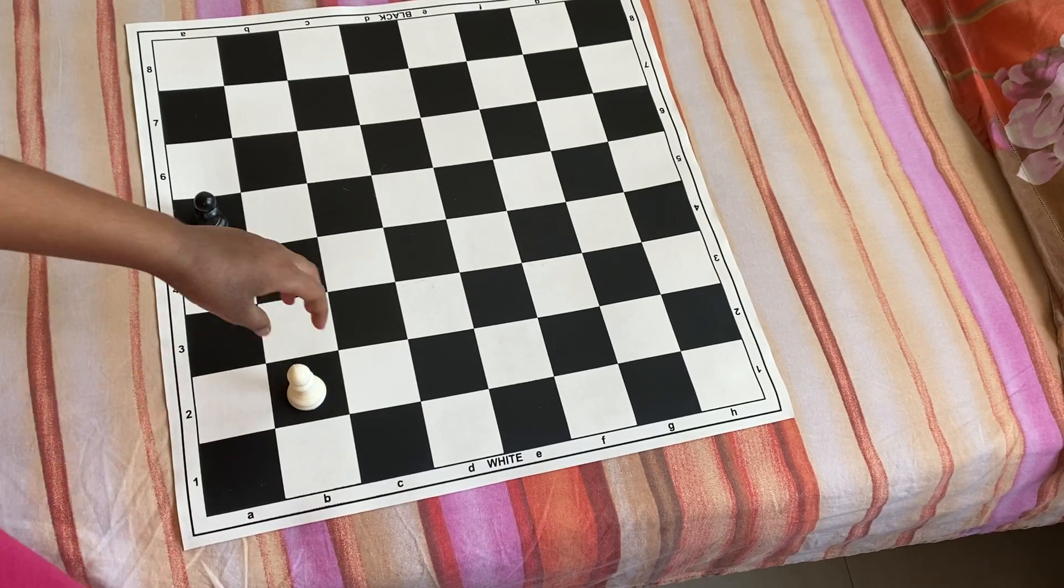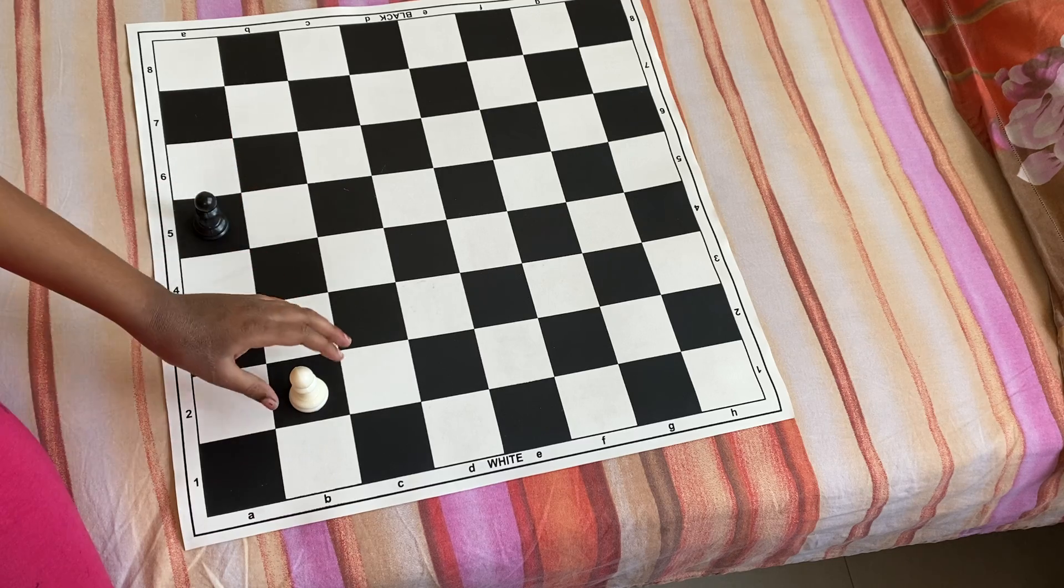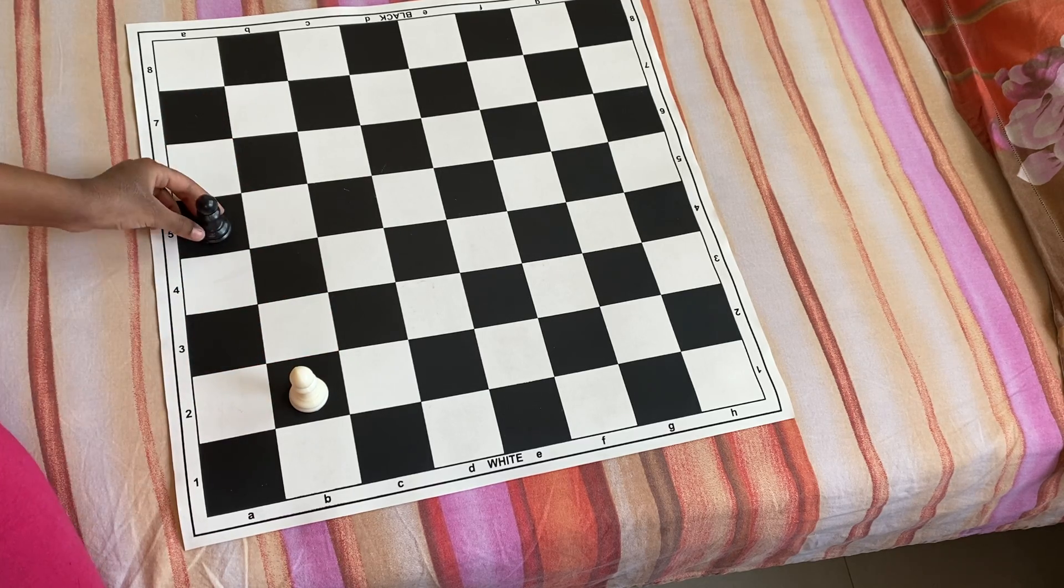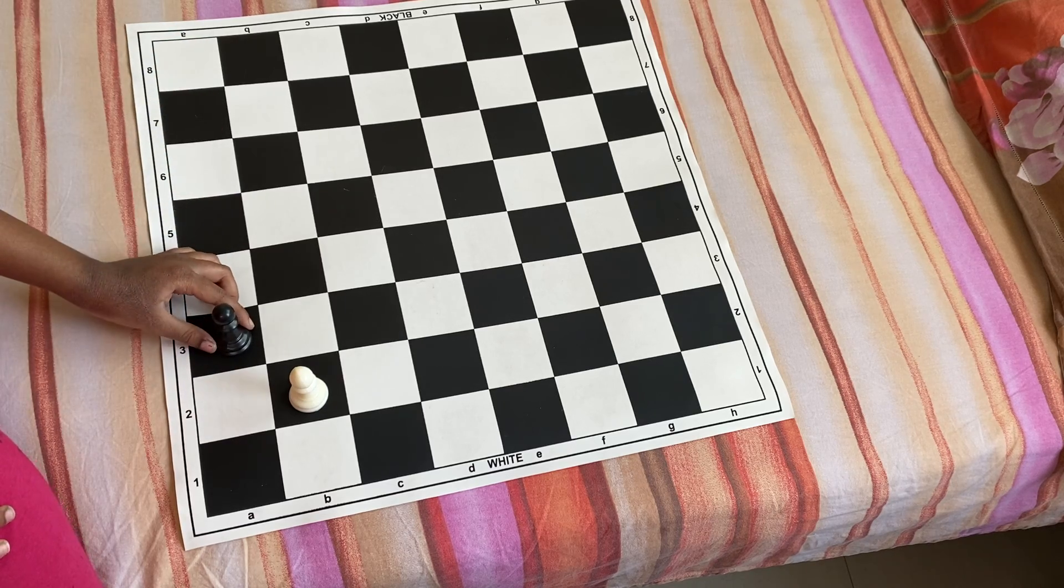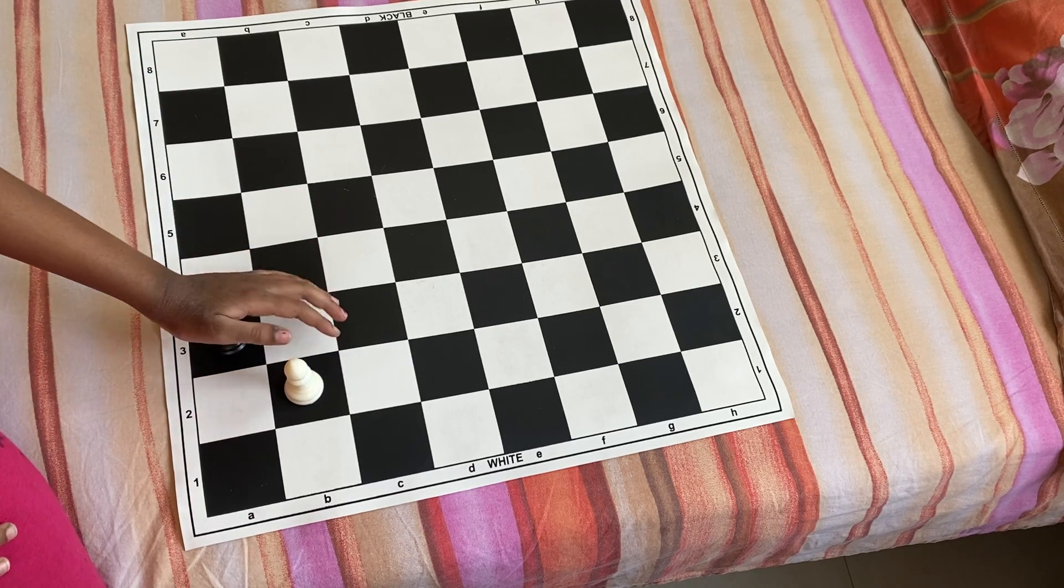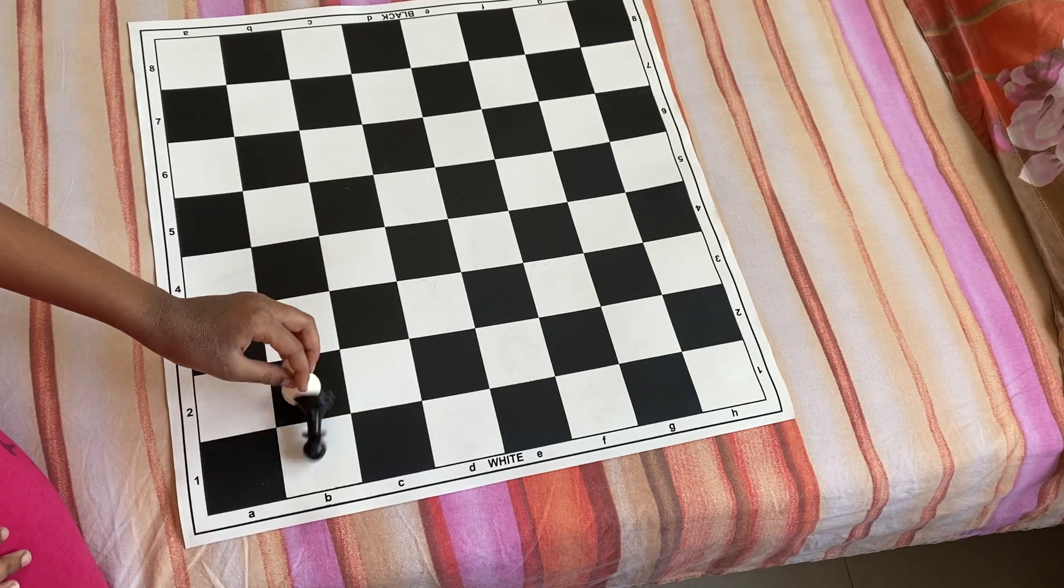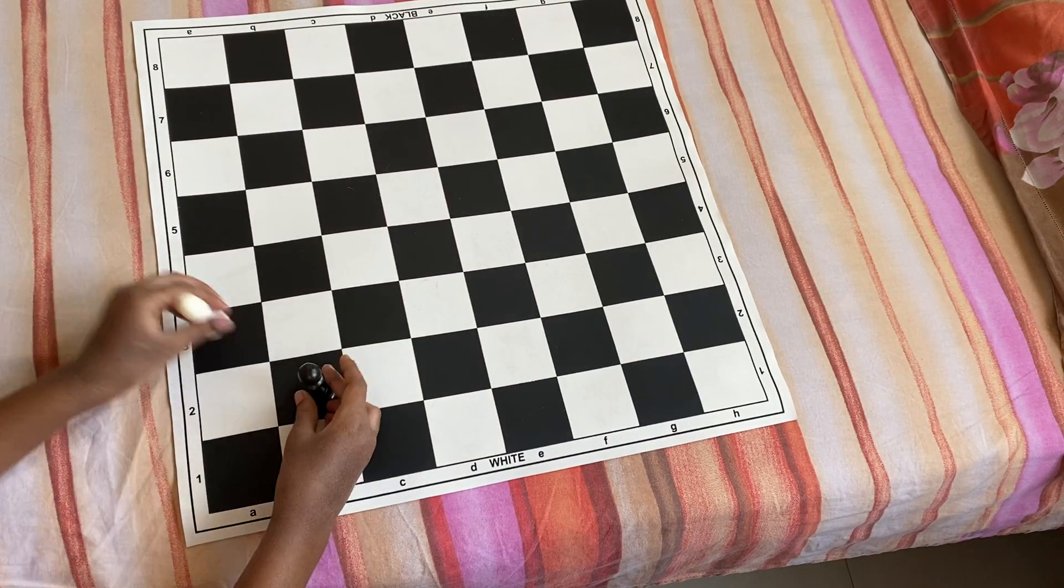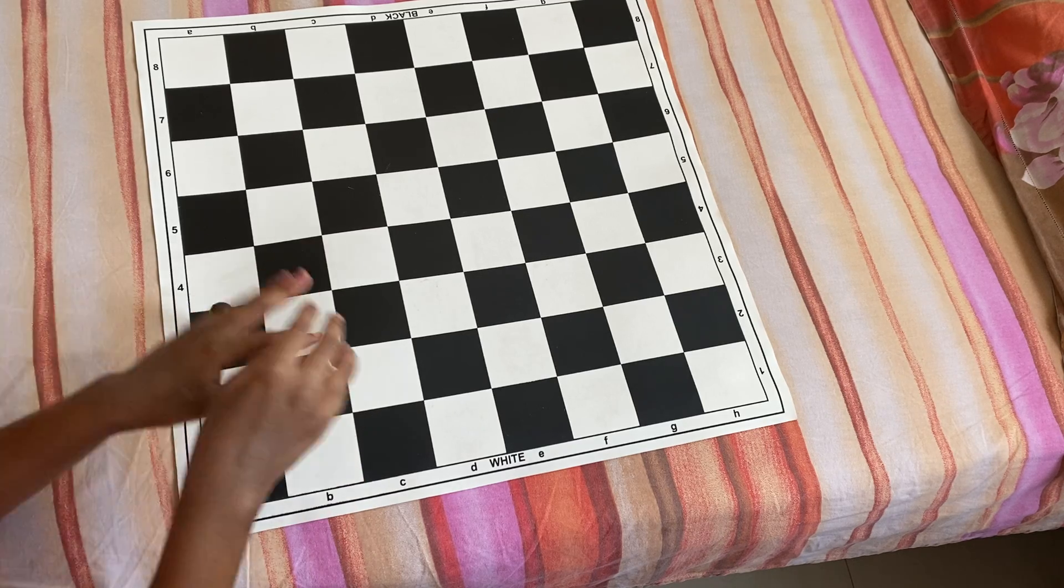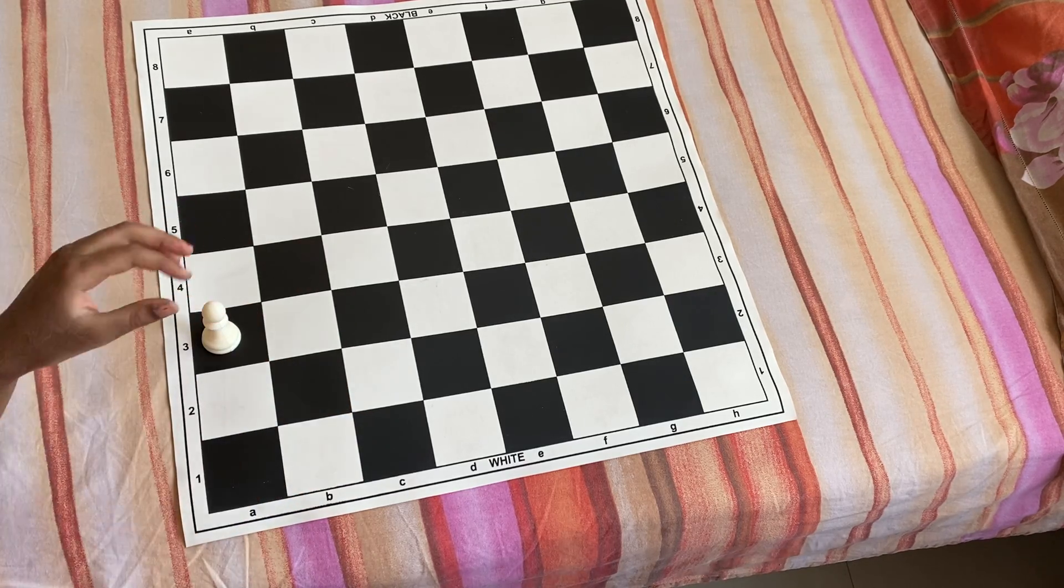So now, a pawn can capture a pawn or another piece diagonally. Now, if this pawn is here and it was black's turn, then the black would capture this pawn and put it out of the game. And if it's white's turn, it would just kill the black pawn.